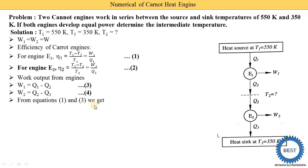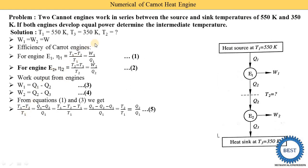From equations one and three, we substitute W1 = Q1 minus Q2 into equation one. So T1 minus T2 upon T1 equals Q1 minus Q2 upon Q1. Subtracting T1 from the left side and Q1 from the right side, the T1 and Q1 terms cancel, leaving T2 upon T1 = Q2 upon Q1 — equation number five. Similarly from equations two and four, substituting W2 = Q2 minus Q3 gives T3 upon T2 = Q3 upon Q2 — equation number six.